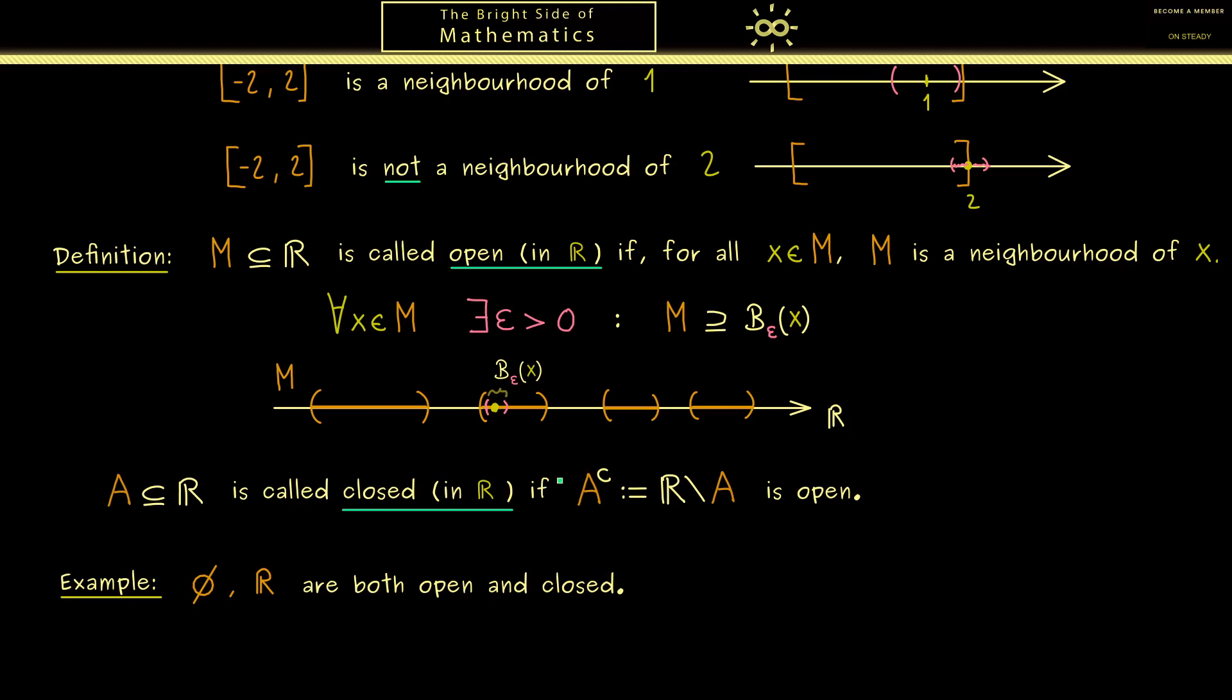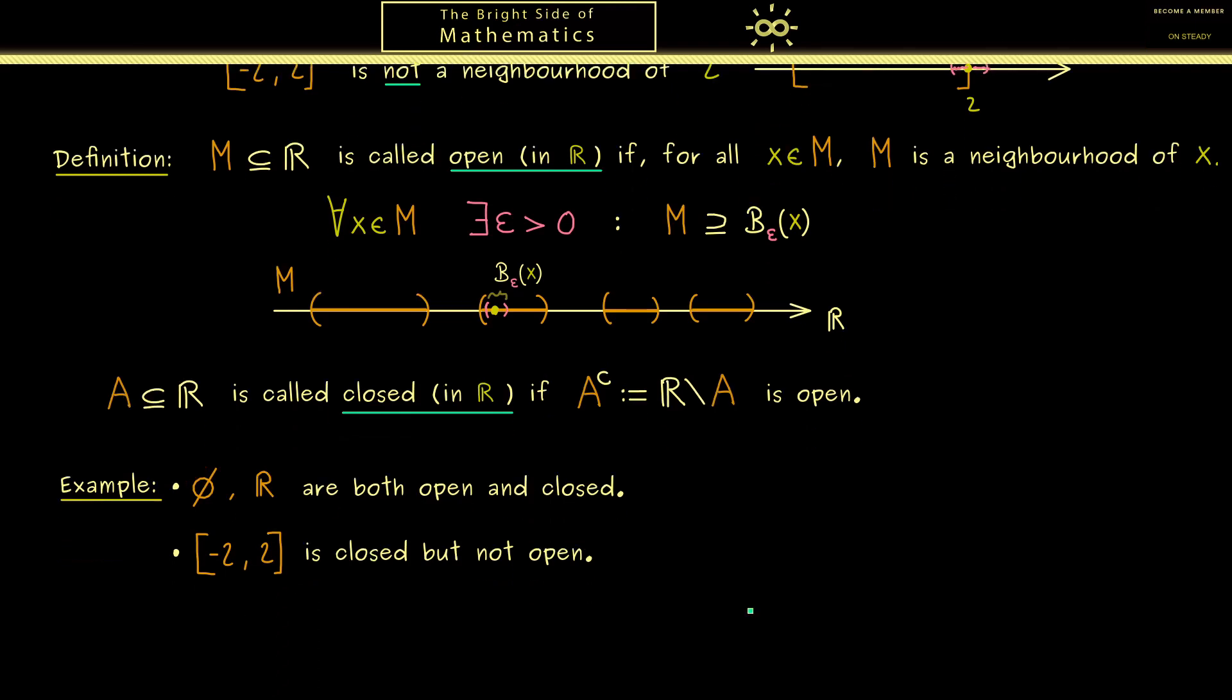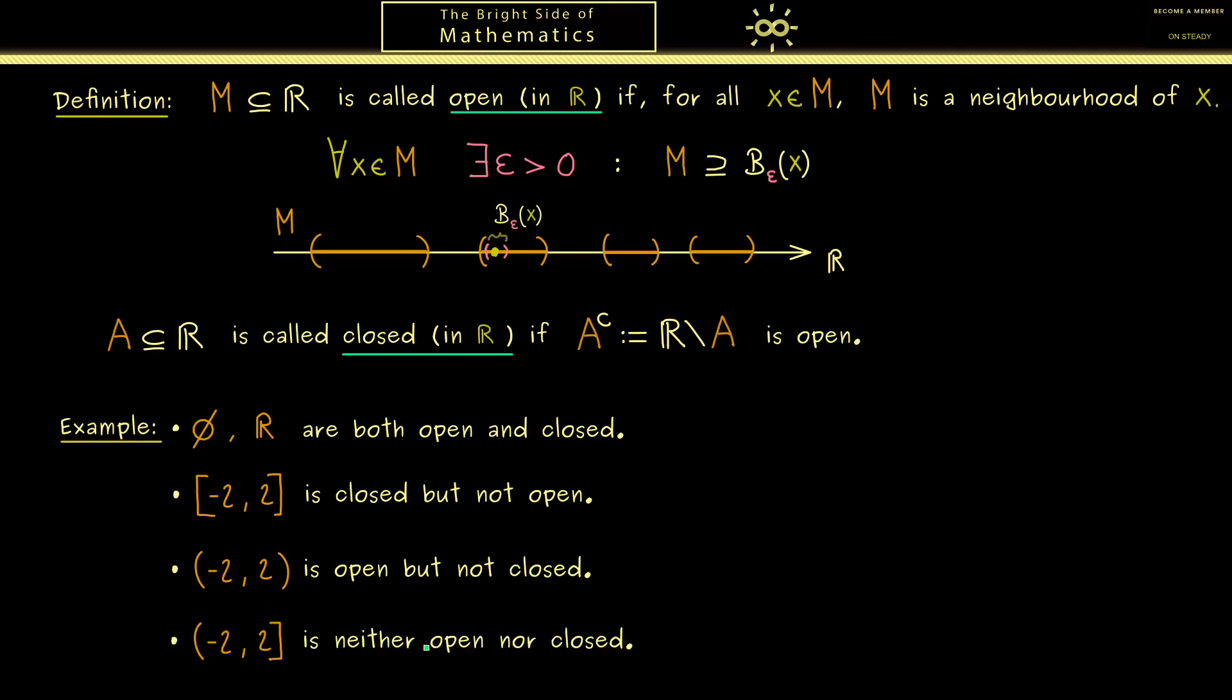The next example we've already discussed - an interval of this form is closed but not open. Therefore we often call such intervals closed intervals. Of course then the next example would be an open interval. So that's good to know, when we use the parentheses here we get an open set. However in this case it's not a closed set which you can prove. And in the last example here I want to mix the brackets. And in this case we don't have any of the two properties, it's neither open nor closed.